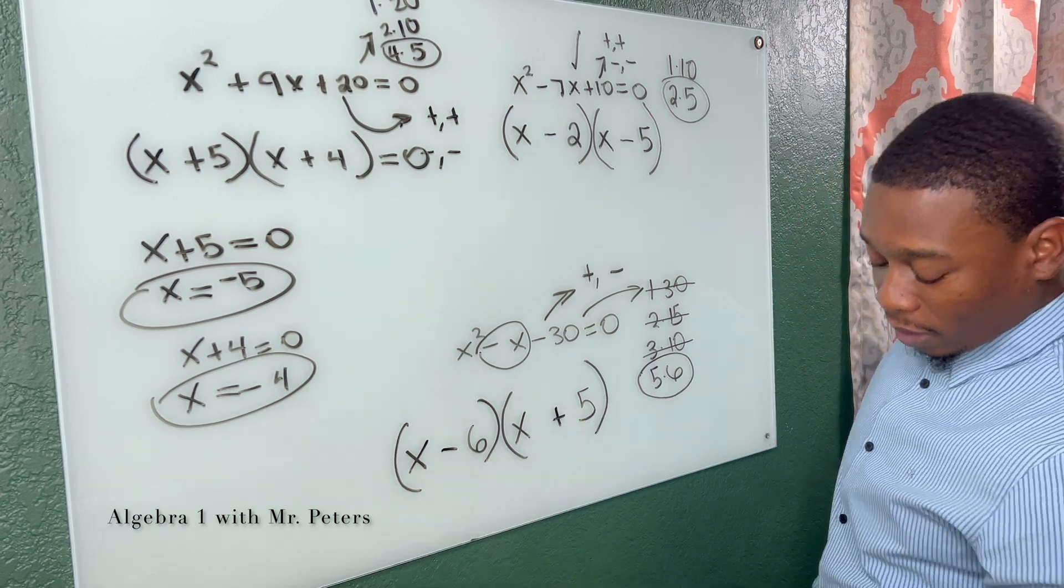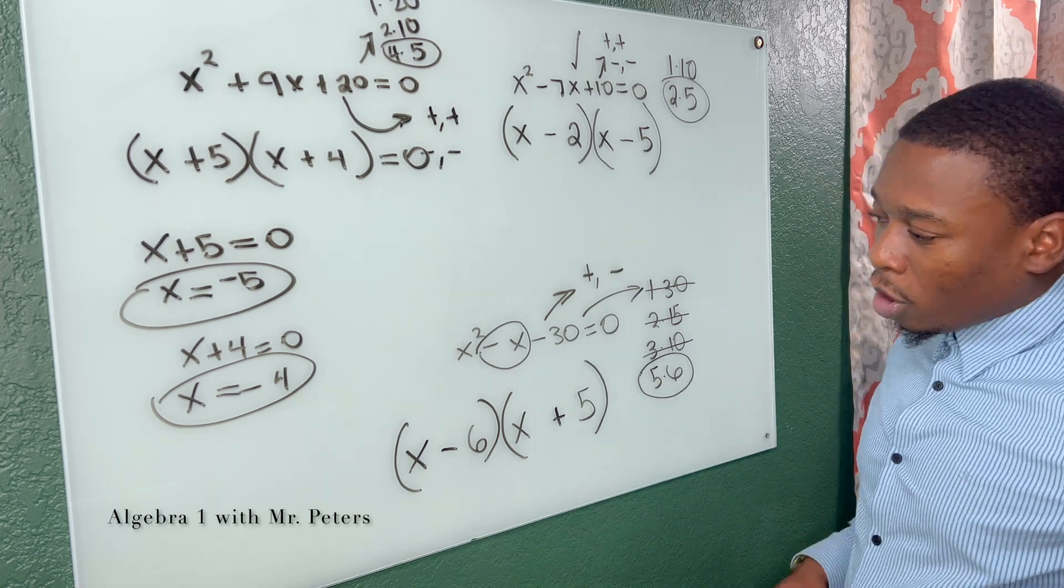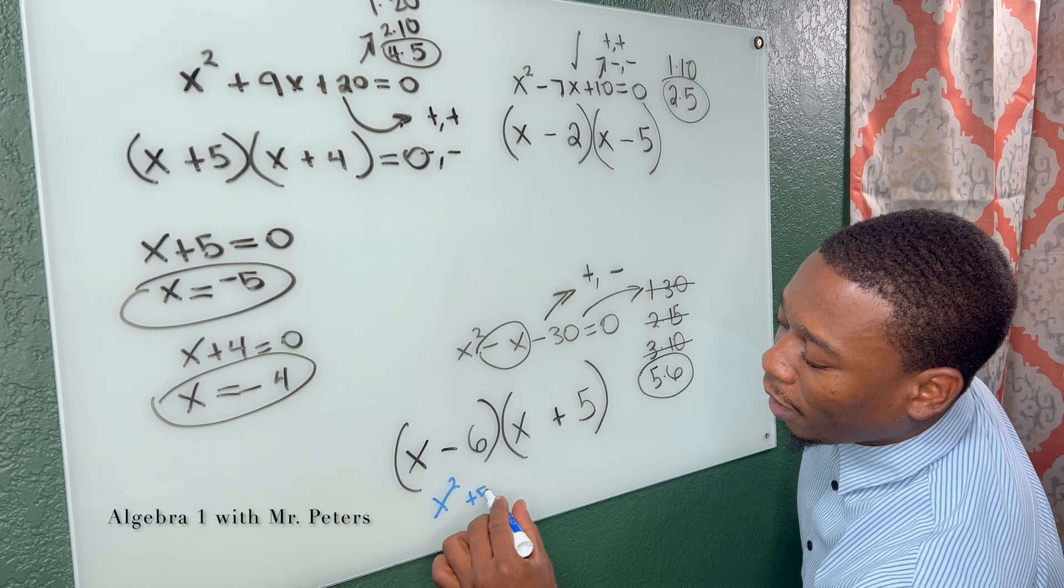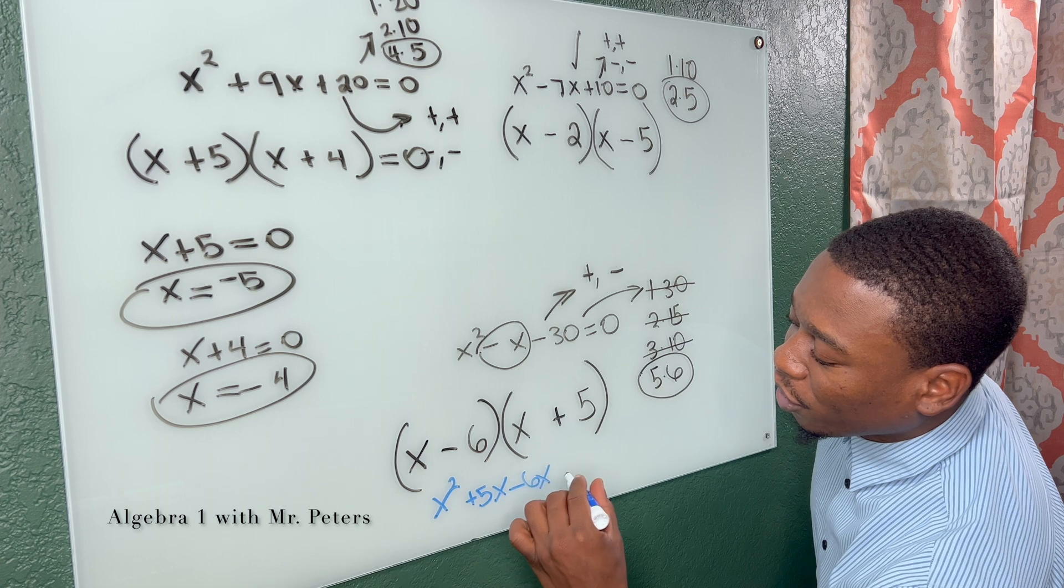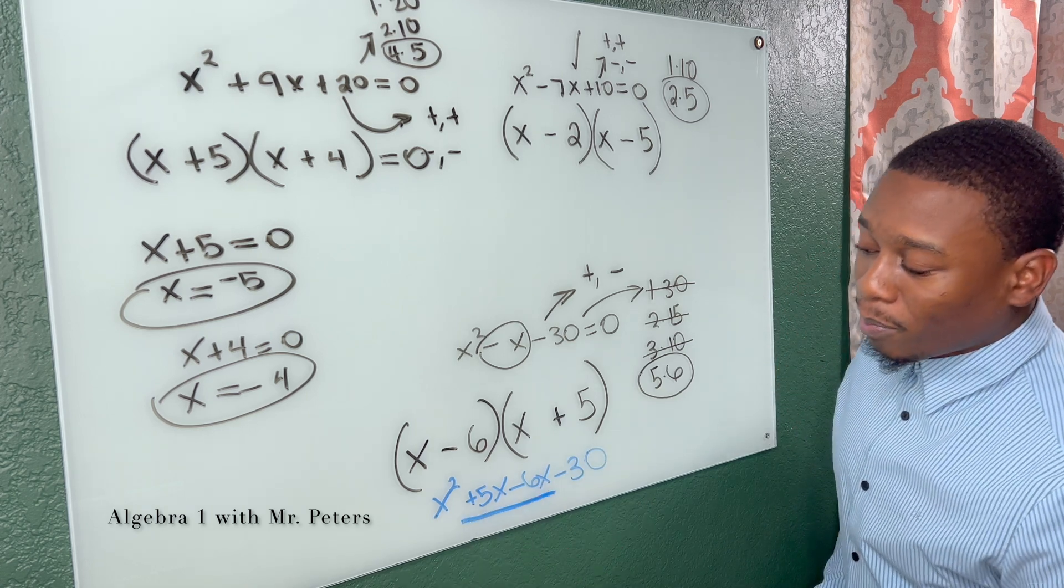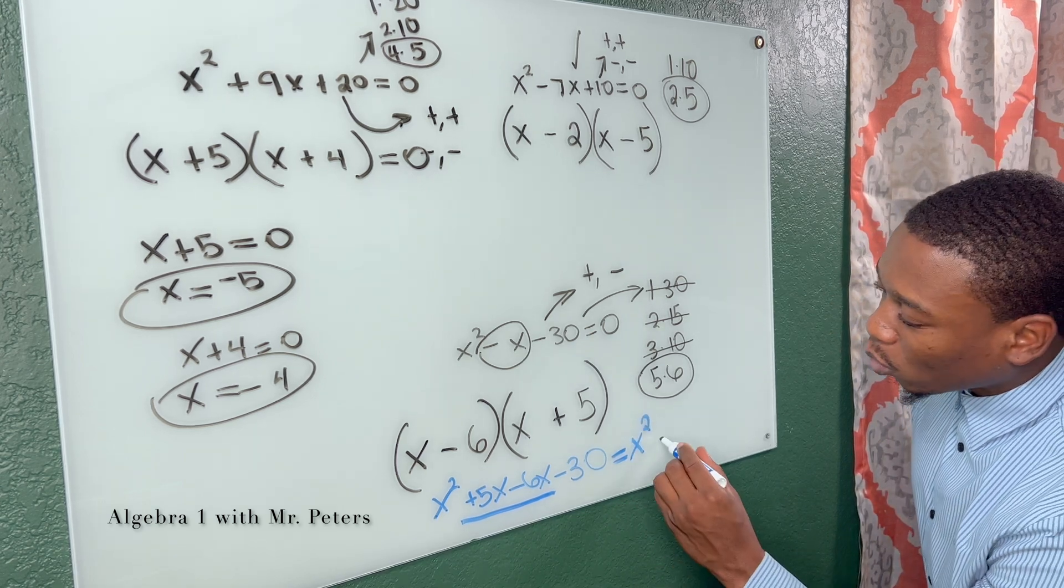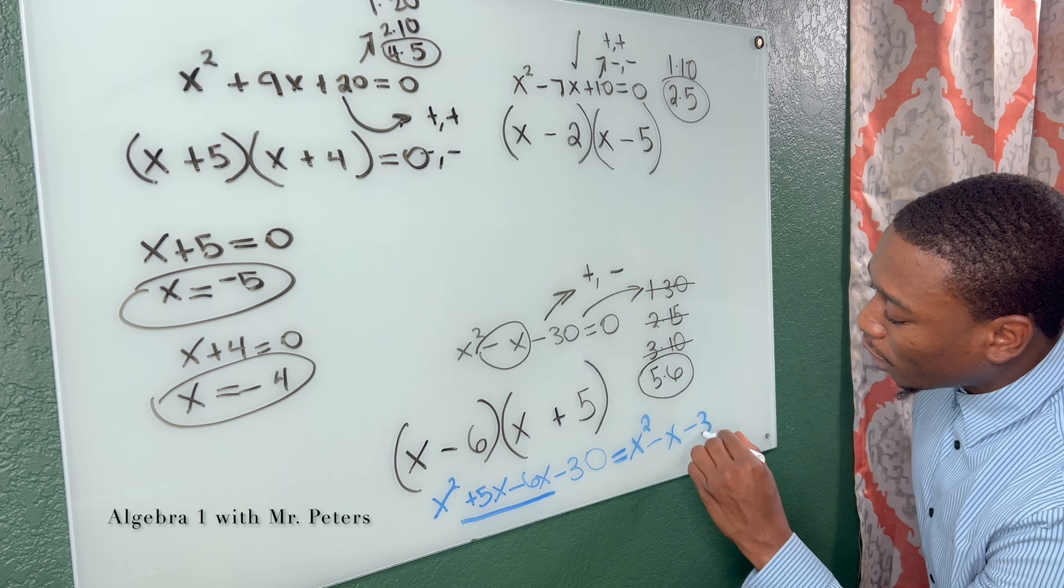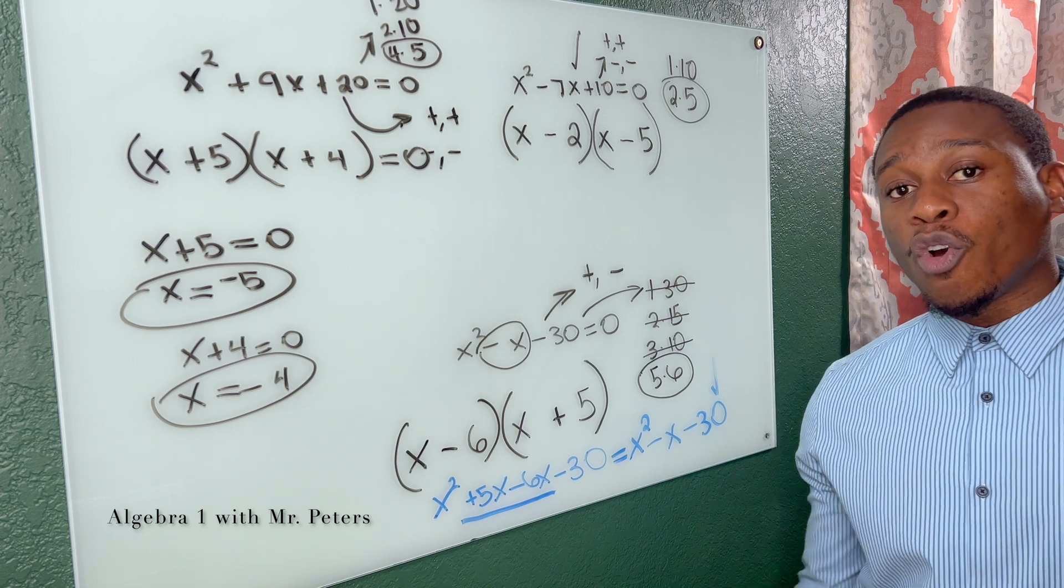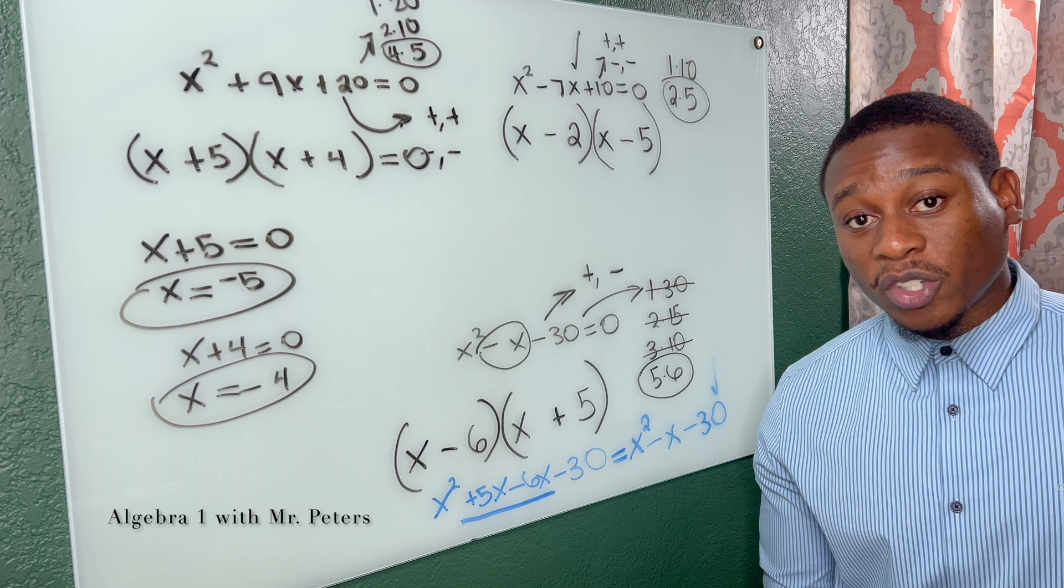Once we distribute this back, let's do this real quick before we wrap this problem up. We're going to get x squared plus 5x minus 6x minus 30. Once we combine negative five and positive six, we'll get our original quadratic equation, which is x squared minus x minus 30. So if you learn these basics when we're talking about factoring trinomials, this is going to make it so much easier when we get to the more challenging aspects of quadratics.